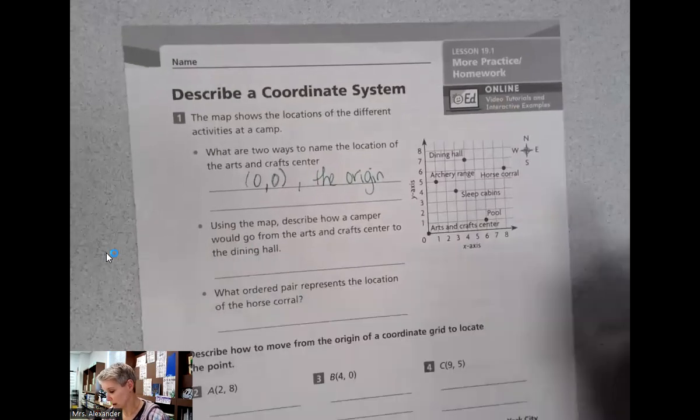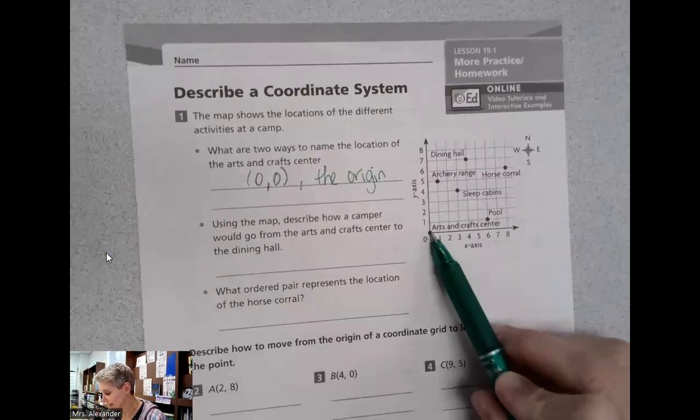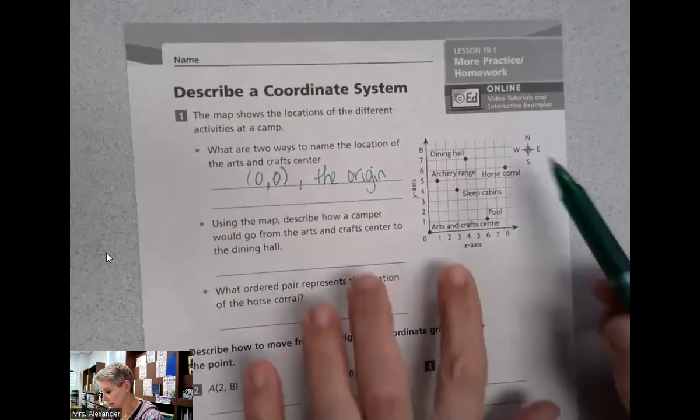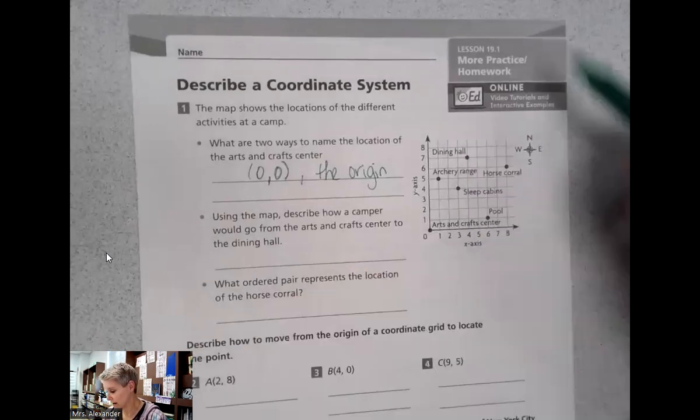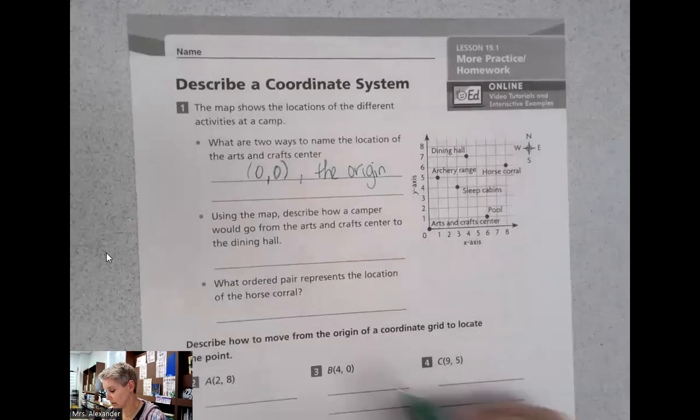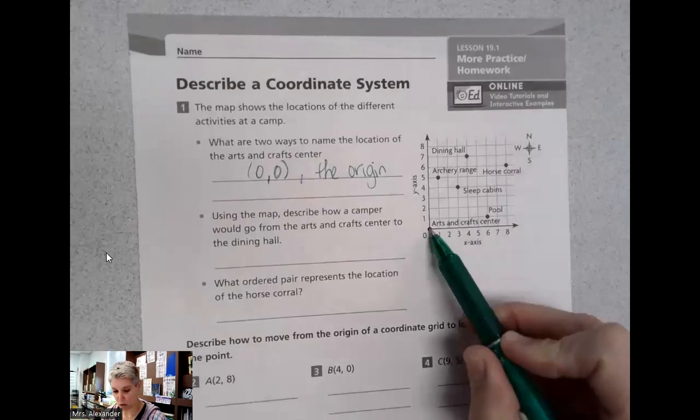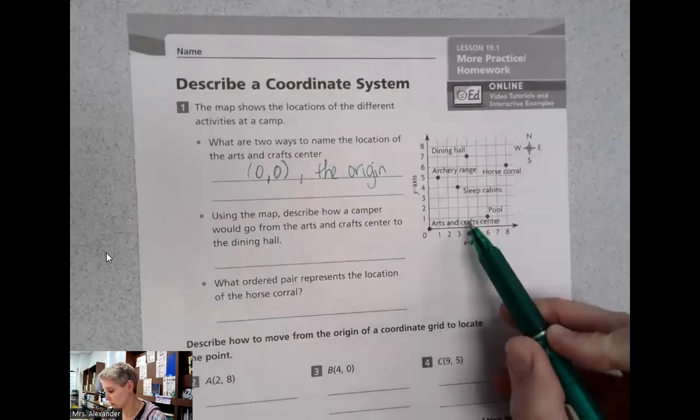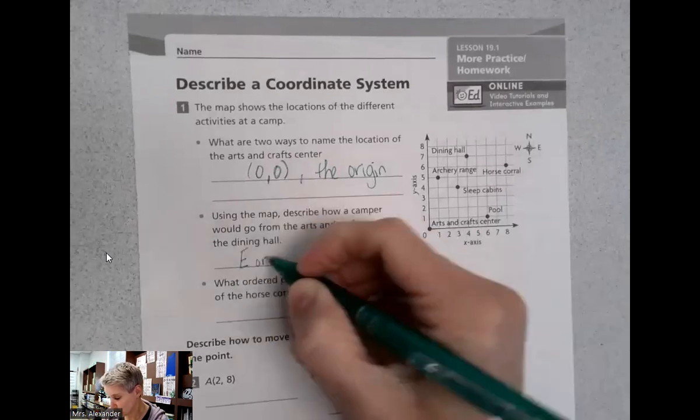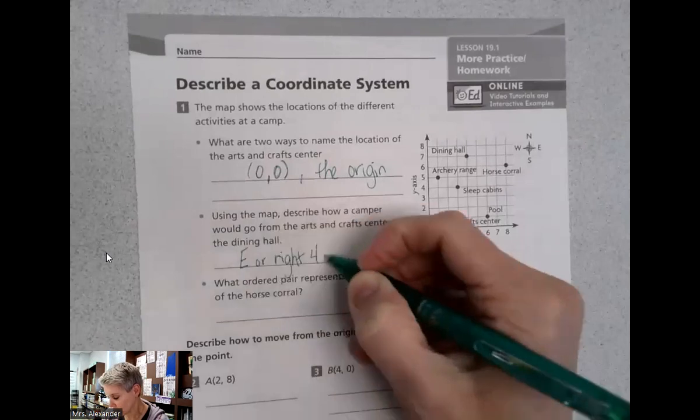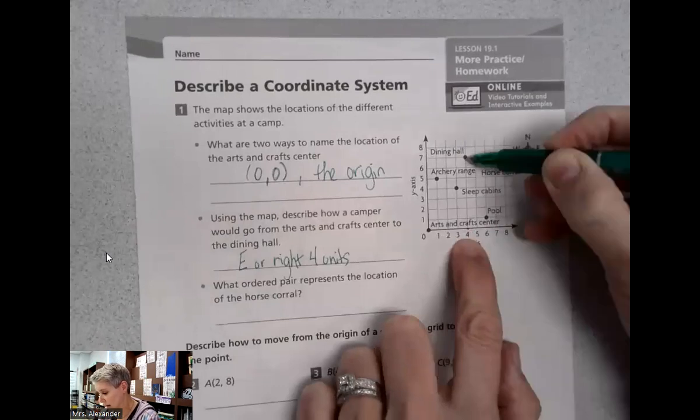Now using the map, describe how a camper would go from the arts and crafts center to the dining hall. So look where the dining hall is. A couple of ways that we can talk about it. We do have our compass rows here to help us. So we can say from arts and crafts, go east or right four units. That gets us here.